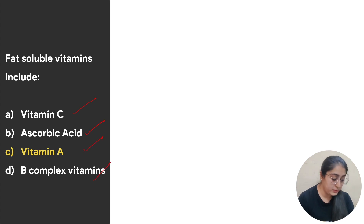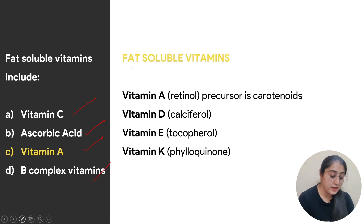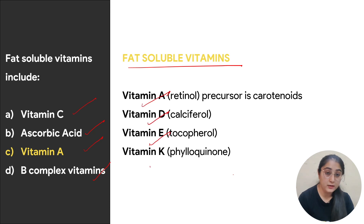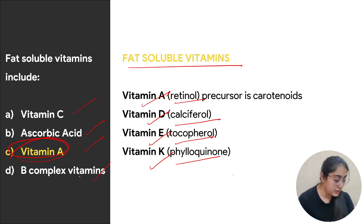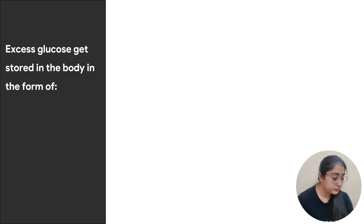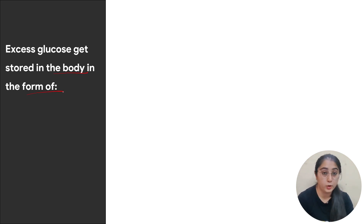The next question asks about fat soluble vitamins — options are vitamin C, ascorbic acid, vitamin A, or B complex vitamins. Fat soluble vitamins include vitamin A, D, E, and K — retinol, calciferol, tocopherol, and phylloquinol. Among the options, the correct answer is vitamin A; all other given options are water soluble vitamins.